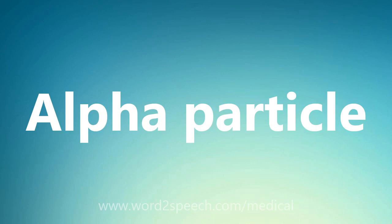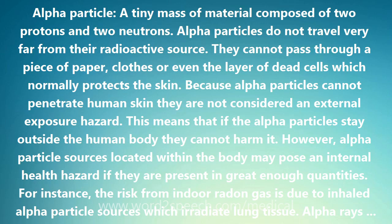Alpha Particle: a tiny mass of material composed of two protons and two neutrons. Alpha Particles do not travel very far from their radioactive source. They cannot pass through a piece of paper, clothes, or even the layer of dead cells which normally protects the skin.